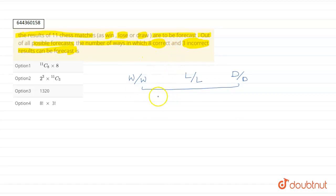So basically, we can say that the number of ways in which a game can be predicted correctly is one. Because if he says win, then it has to be win. There is no other way. So the number of ways of correct forecast equals one.